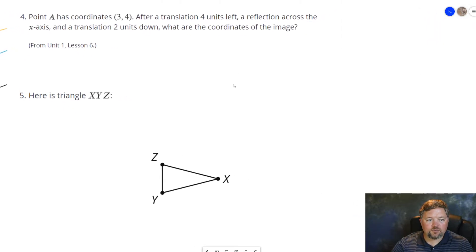Point A has coordinates (3, 4). After a translation 4 units left, a reflection across the x-axis, and a translation 2 units down, what are the coordinates of the image? So let's think about just where this would be. (3, 4), it's going to be about here.